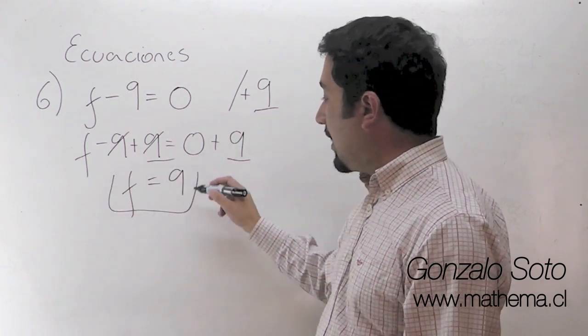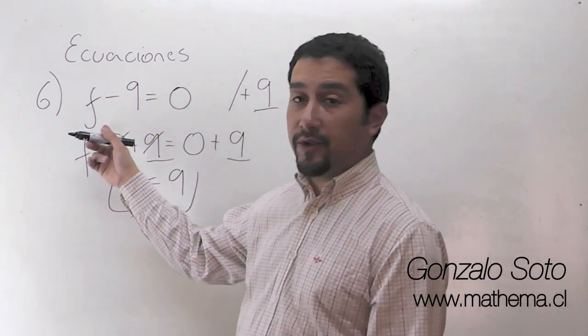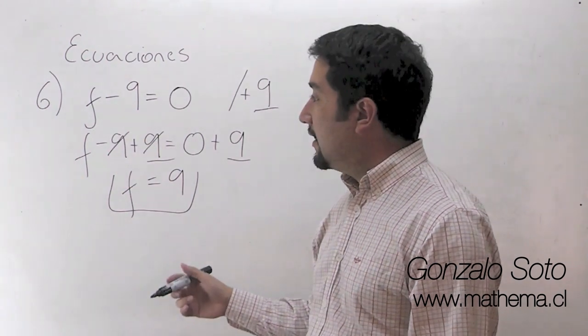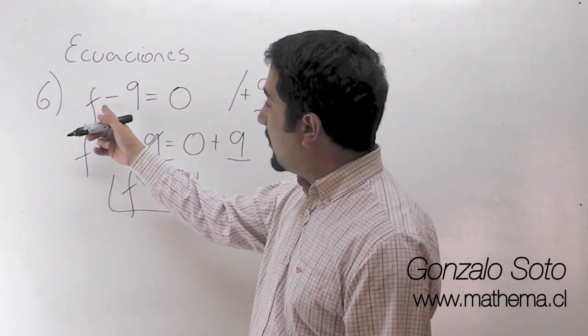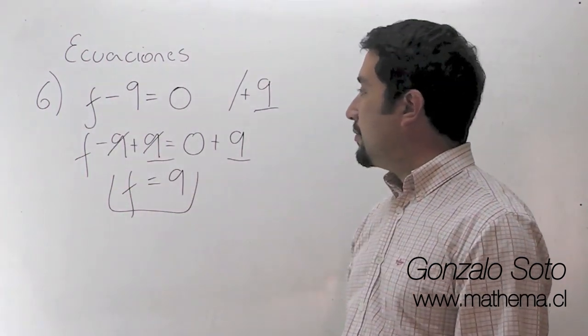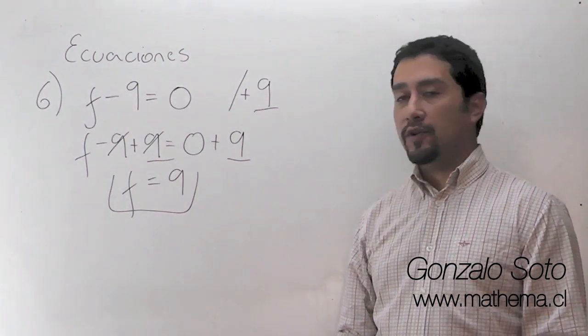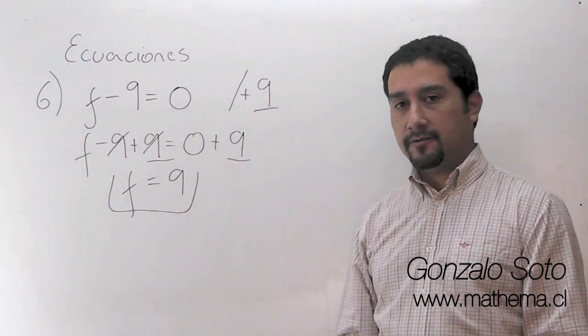Por lo tanto me queda que f es igual a 9. Entonces, a pesar de que nosotros solamente en mirar podíamos saber cuál era el valor de f, de todas maneras lo hicimos de la manera en que hemos estado trabajando.